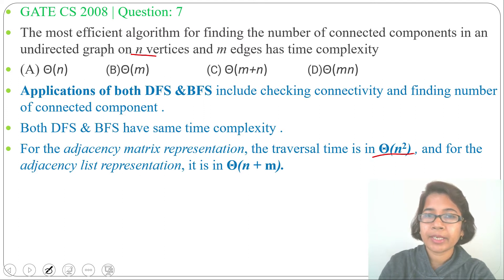And in case of adjacency list representation, running time will be Θ(number of vertices plus number of edges). Here n vertices and m edges, so in case of adjacency list representation, time complexity will be Θ(n + m).